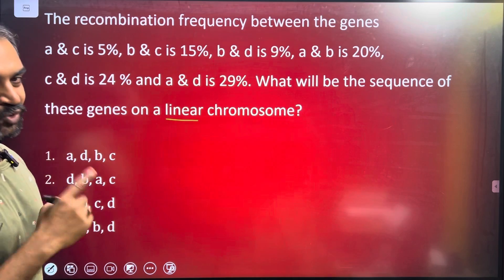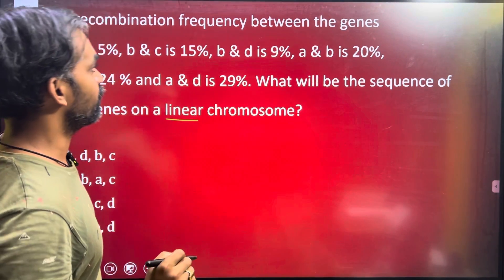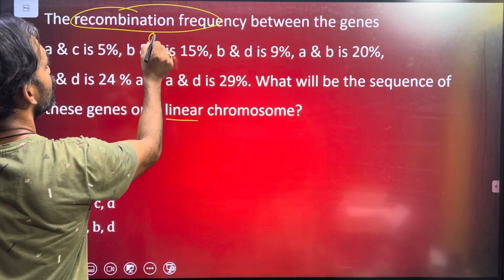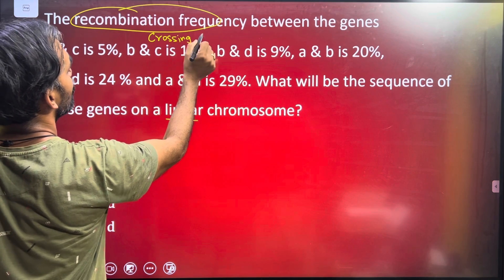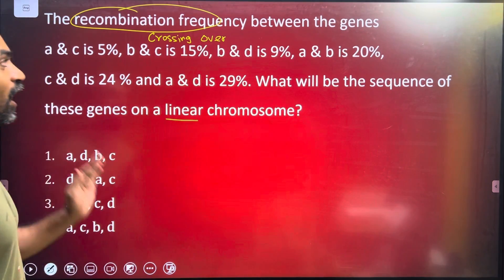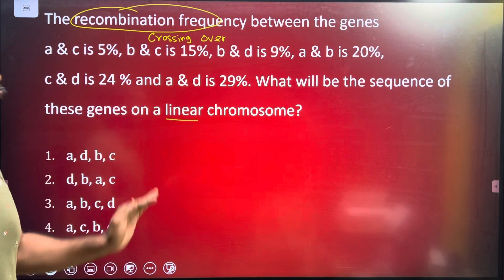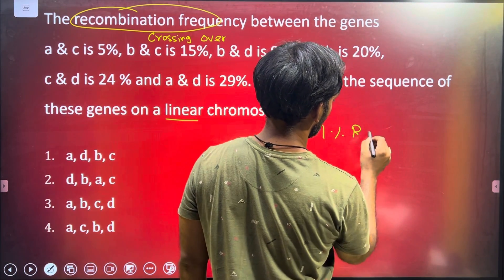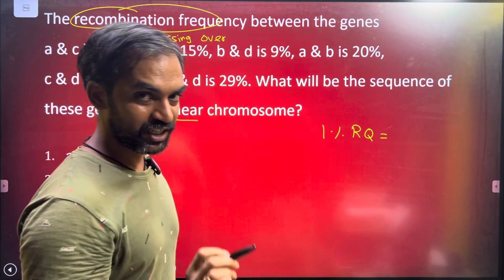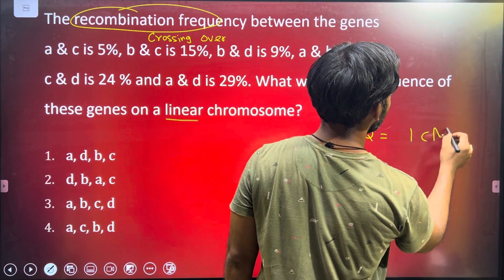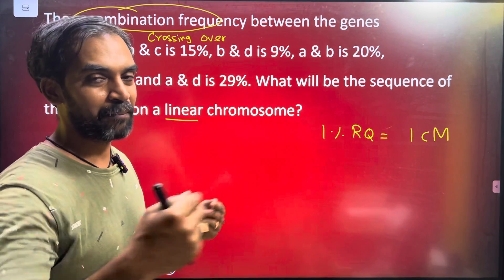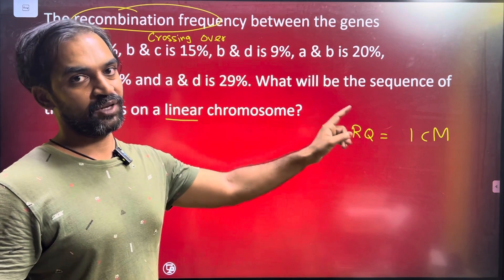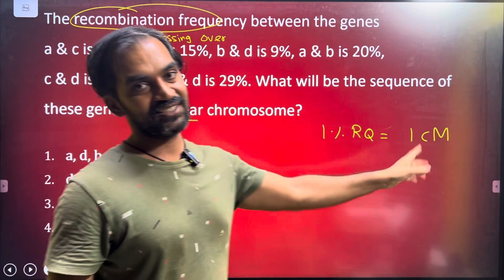That is a linear chromosome, so let's see how the recombination frequency works. Crossing over frequency, or the percentage, that is the recombination frequency. 1% recombination frequency is equal to 1 cM map distance.